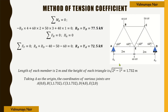Considering the equilibrium of the entire frame, we'll apply summation MA = 0, summation FH = 0 (equilibrium along horizontal direction), and summation FV = 0 (equilibrium along vertical direction).